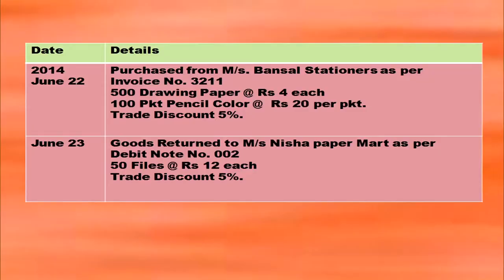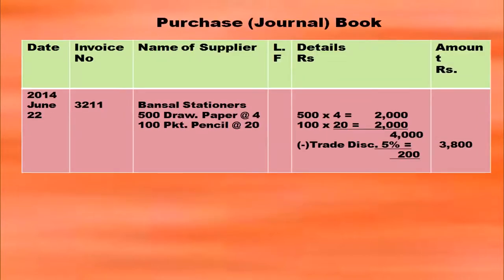Purchase from Messrs. Benzel Stationers: 500 drawing paper and 10 packet pencil colour are purchased, trade discount at 5 percent. On June 23rd goods are returned to Messrs. Nisha Paper Mart, so you have to prepare two books here — one purchases book and another purchase returns book. In the purchases journal writing Benzel Stationers: 500 drawing paper at rupees 4 and 100 packet pencil at rupees 20. So 500 × 4 = 2,000 and 100 × 20 = 2,000, giving 4,000. Less trade discount 5 percent: 4,000 × 5/100 = 200. So 4,000 minus 200 = 3,800.